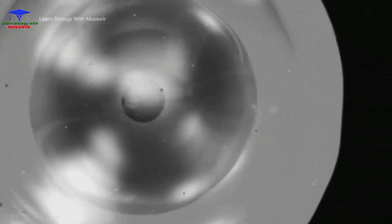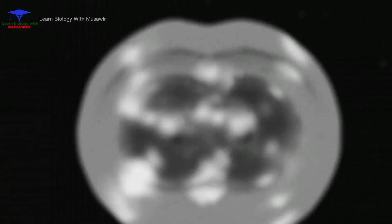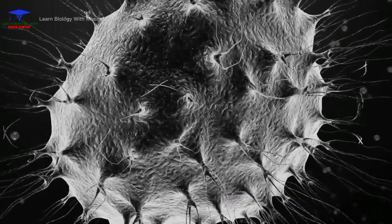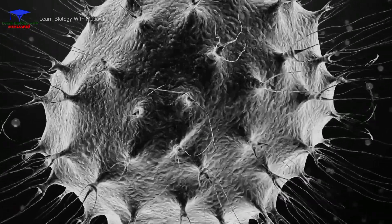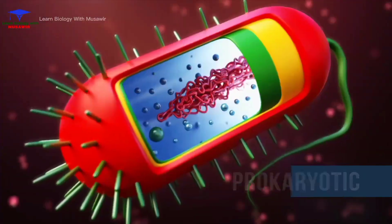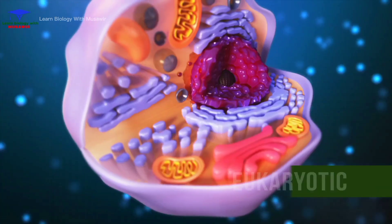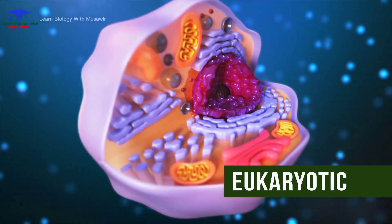A cell is the smallest unit of life and the building block of all living organisms. There are two general classifications of cells: prokaryotic cells and eukaryotic cells.